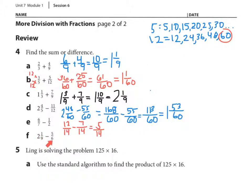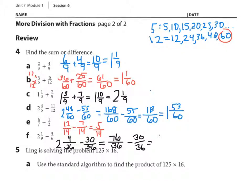Number 4f: ninths and sixths. The least common multiple is 36. Two and one-ninth — multiply by 4 — so one times 4 is four, giving two and four thirty-sixths. Subtracting five-sixths — multiply by 6 — so five times 6 is 30, giving thirty thirty-sixths. I can't take 30 from 4, so I convert to an improper fraction: seventy-six thirty-sixths minus thirty thirty-sixths equals forty-six thirty-sixths, which as a mixed number is one and ten thirty-sixths. Simplified — since ten divided by 2 is 5 and 36 divided by 2 is 18 — the final answer is one and five-eighteenths.